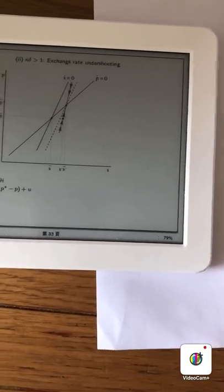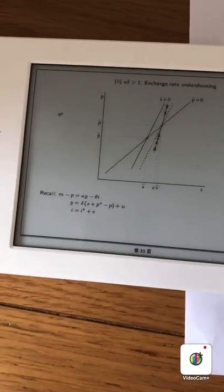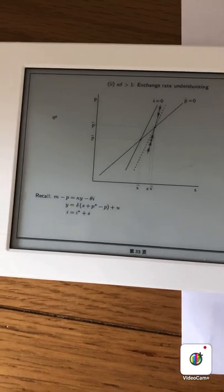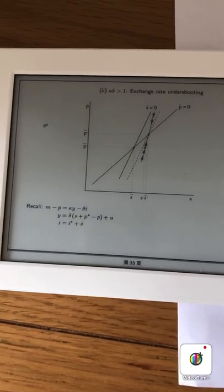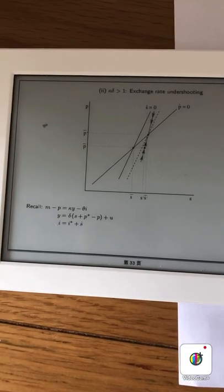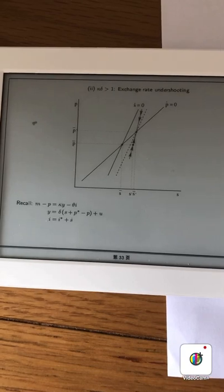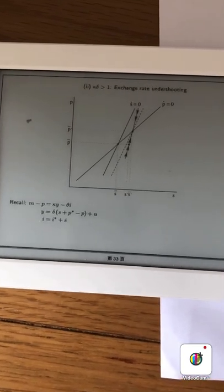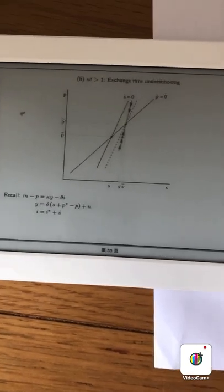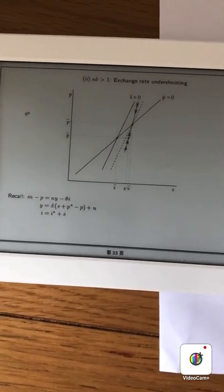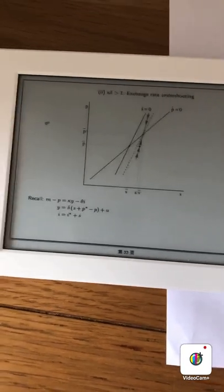And moreover we can see this from the third equation. So if we have that i is larger than i star, then that means we have a depreciation. So we need s dot to be larger than 0.